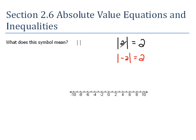A positive 2 here is 2 units away from 0. And a negative 2 here is 2 units away from 0. That's what absolute value means.